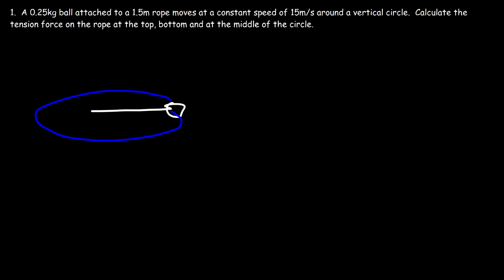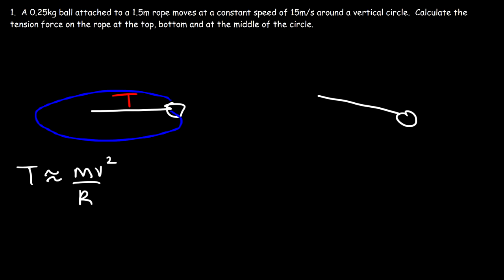Let's distinguish horizontal circular motion from vertical circular motion. In horizontal circular motion, the tension force is approximately equal to the centripetal force — it's mv² over r. This is especially true if the ball is moving fast enough; if not, it's going to be at an angle and the circle will be nearly horizontal.